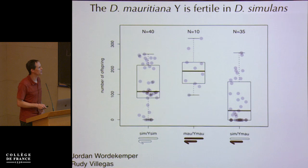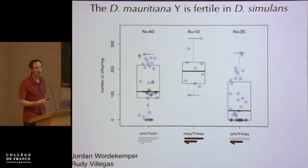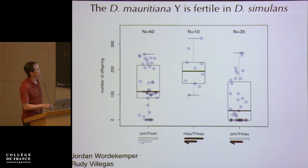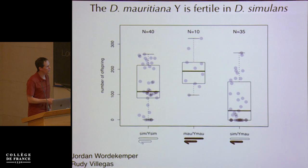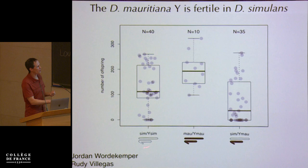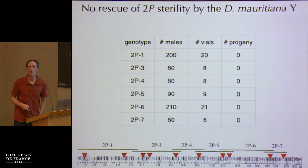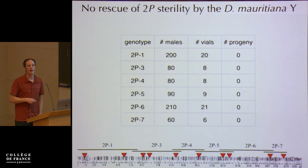It turns out the *mauritiana* Y chromosome is pretty much perfectly fertile in a simulans background. We see statistically significant lower fertility, but many of these males are not sterile at all — some produce over 200 offspring. This first tells us there are no significant interactions between the simulans X and the *mauritiana* Y to cause sterility. We can also use this genotype to test whether any of our X-linked factors cause sterility through interactions with the simulans Y chromosome. We crossed our introgressions to this simulans-Y genotype and the answer is none of them — we see zero recovery of fertility. So all of these X-linked factors must cause sterility by interacting with autosomal loci in the simulans genome.